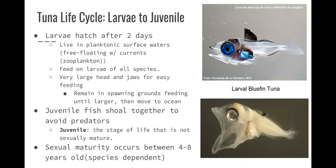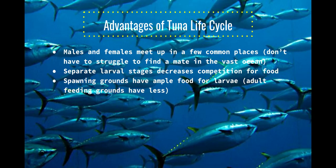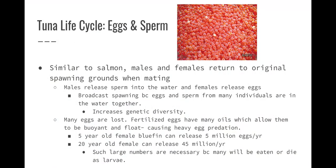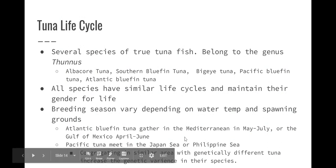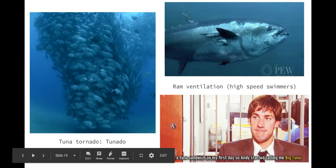Juvenile fish shoal together to avoid predators. The juvenile stage is not sexually mature — like a preteen. Sexual maturity will occur between four and eight years, depending on the species. Advantages of being a tuna: males and females meet up in a few common places so they don't have to find one mate in the vast open ocean. The separate larval stages decrease competition for food and cannibalism. The spawning grounds have a lot of food for the larvae, while the adult feeding grounds in the open ocean have less, and these seas are smaller with more nutrients.